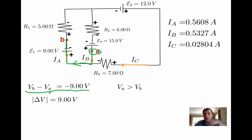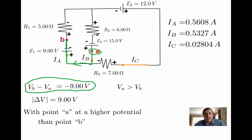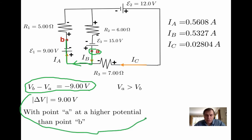Often in textbooks, when they ask for the difference of potential or voltage between two points, they don't specify whether they want VB minus VA or VA minus VB. What they really want is the absolute value. So if asked what's the voltage between points A and B without further information, we calculate the absolute value, which is 9 volts. We can also state: the absolute value of delta V is 9 volts, with point A at a higher potential than point B. Both forms convey the same information.